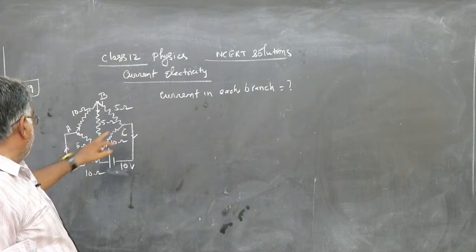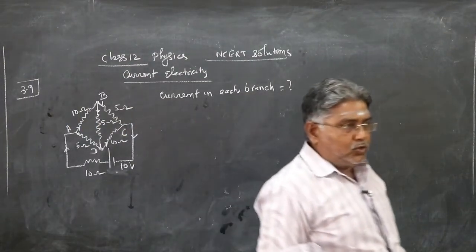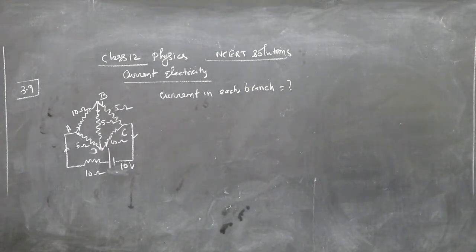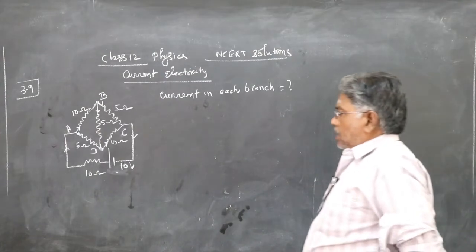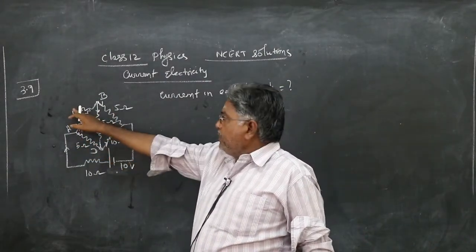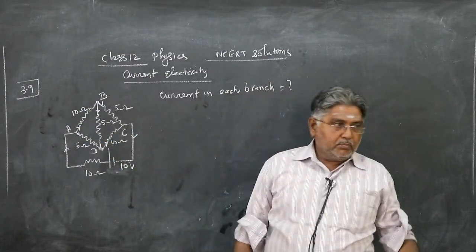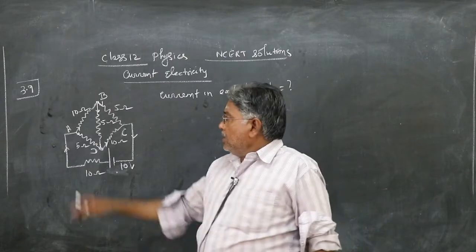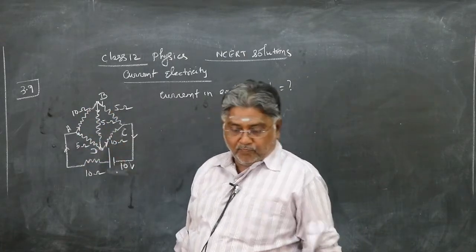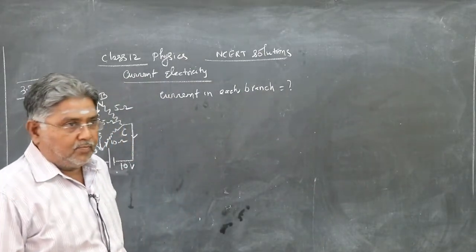The resistors are 10 ohm, 5 ohm, 5 ohm, 10 ohm, and 5 ohm. You may have a feeling that the Wheatstone's bridge is balanced because of the 5, 10, 10, 5 pattern — but it is not balanced. For balance, P/Q should equal R/S, but here 10/5 and 5/10 are not equal, so the bridge is not balanced.